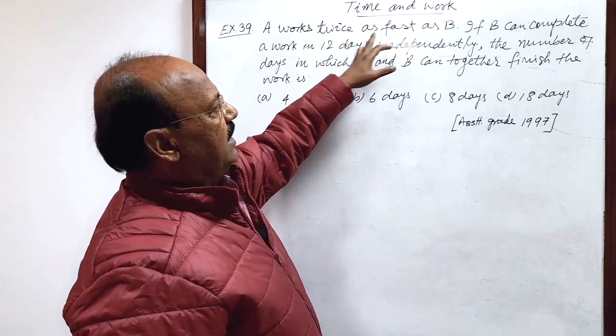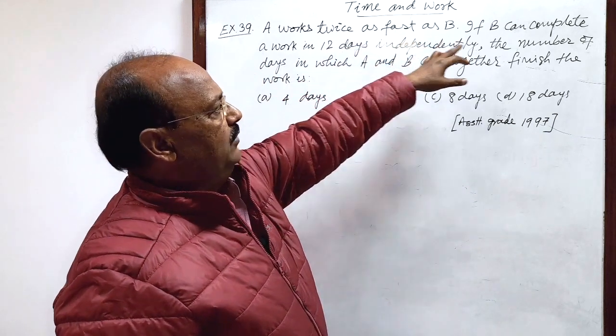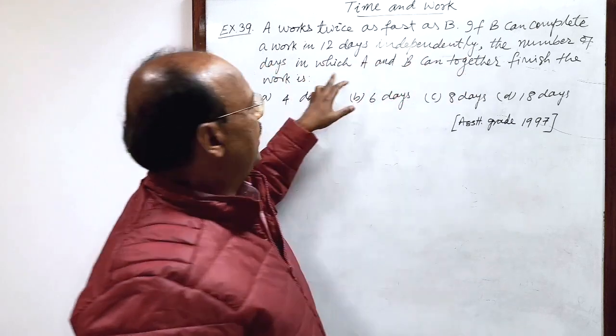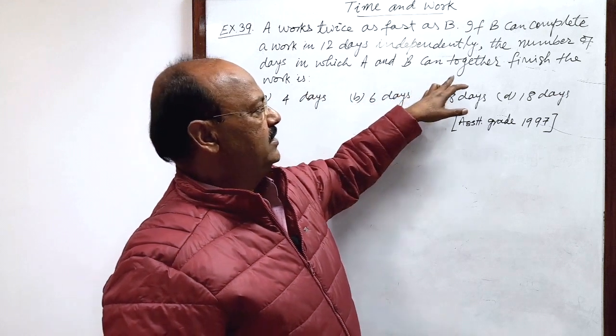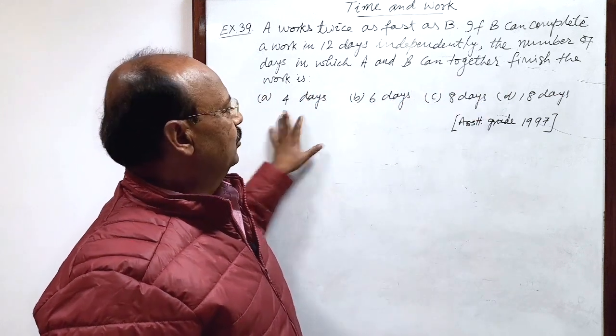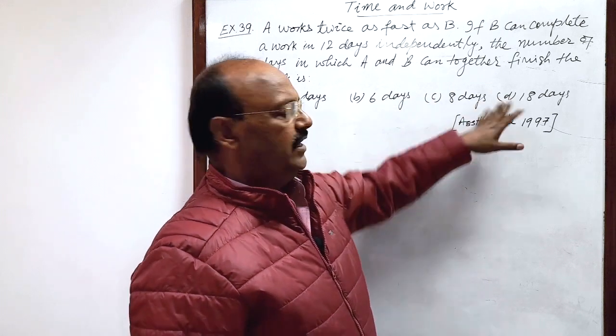Here question is: A works twice as fast as B. If B can complete a work in 12 days independently, the number of days in which A and B can together finish the work is. Four options are here: 4 days, 6 days, 8 days, and 18 days.